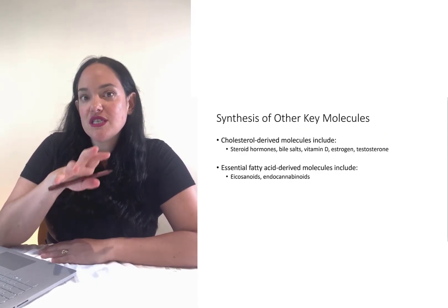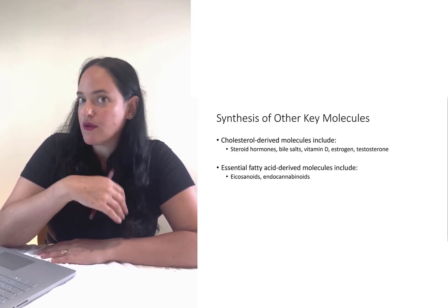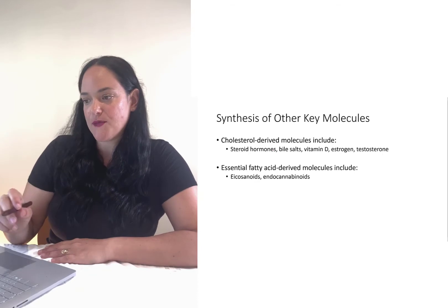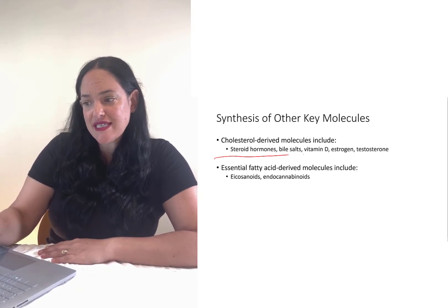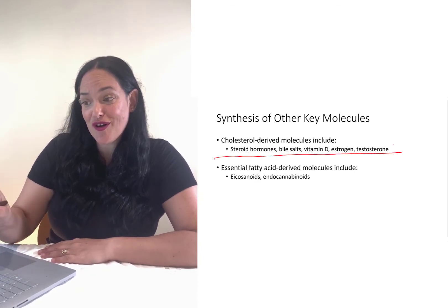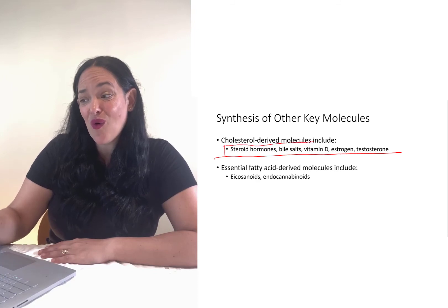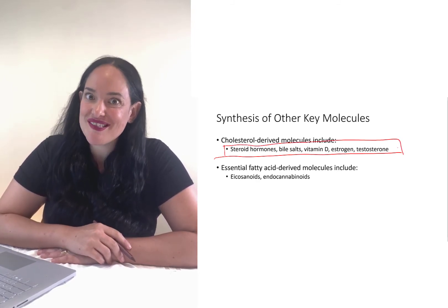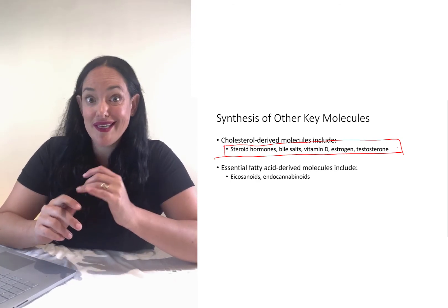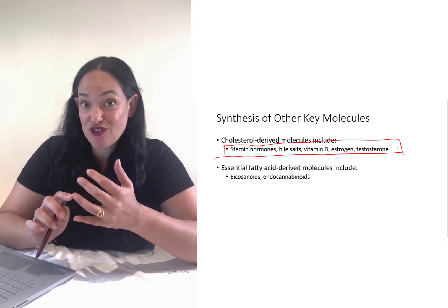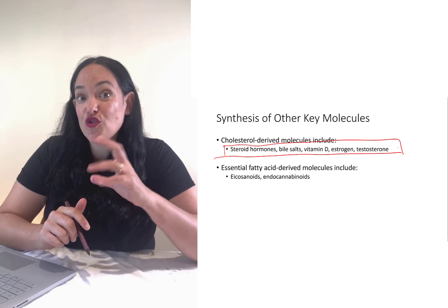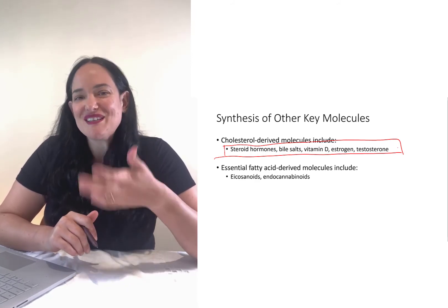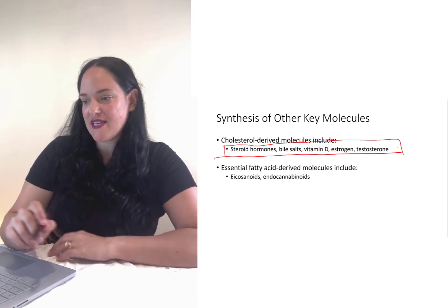Certain lipids can be used to synthesize other key molecules that have important roles in the body. For instance, sterols — in particular cholesterol — can be used to make a whole slew of important things like steroid hormones, bile salts, vitamin D, and the hormones estrogen and testosterone. These are all derived from cholesterol, which is why cholesterol is important, though our body can make it so it doesn't need to come in from the diet.